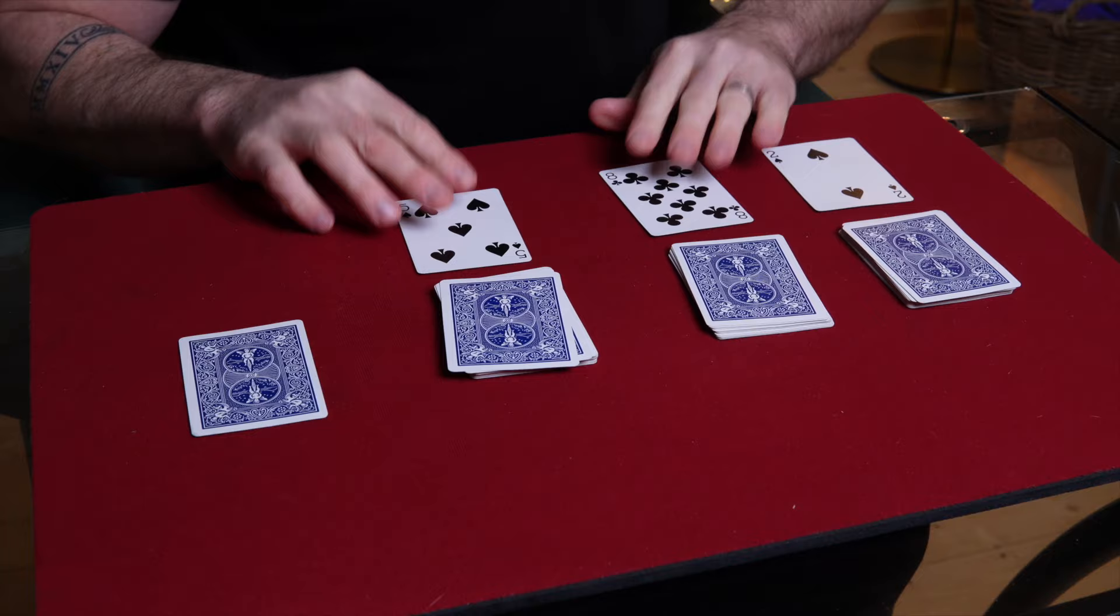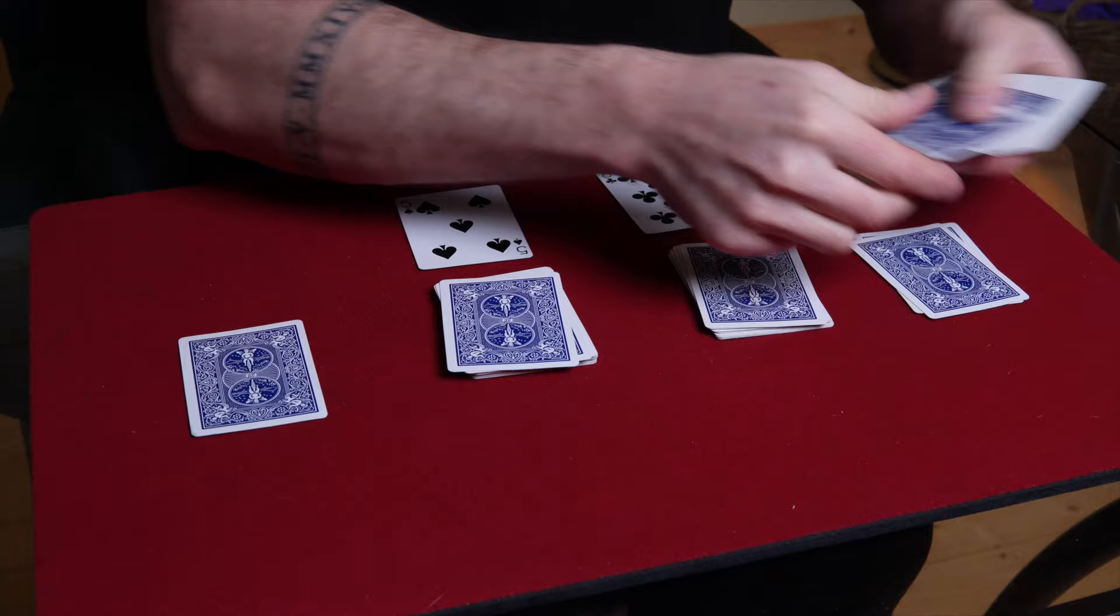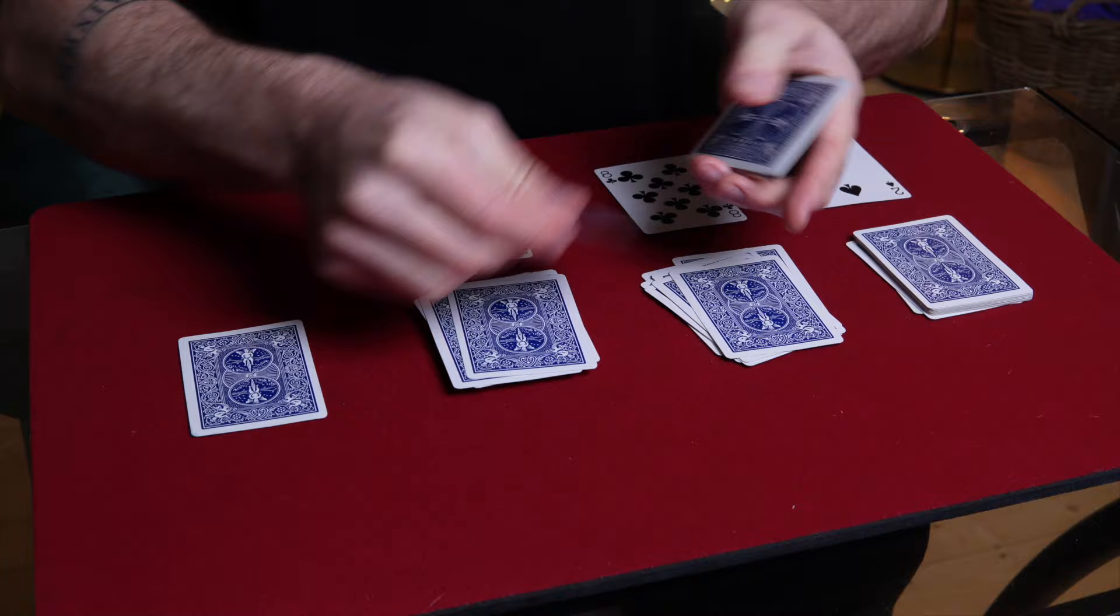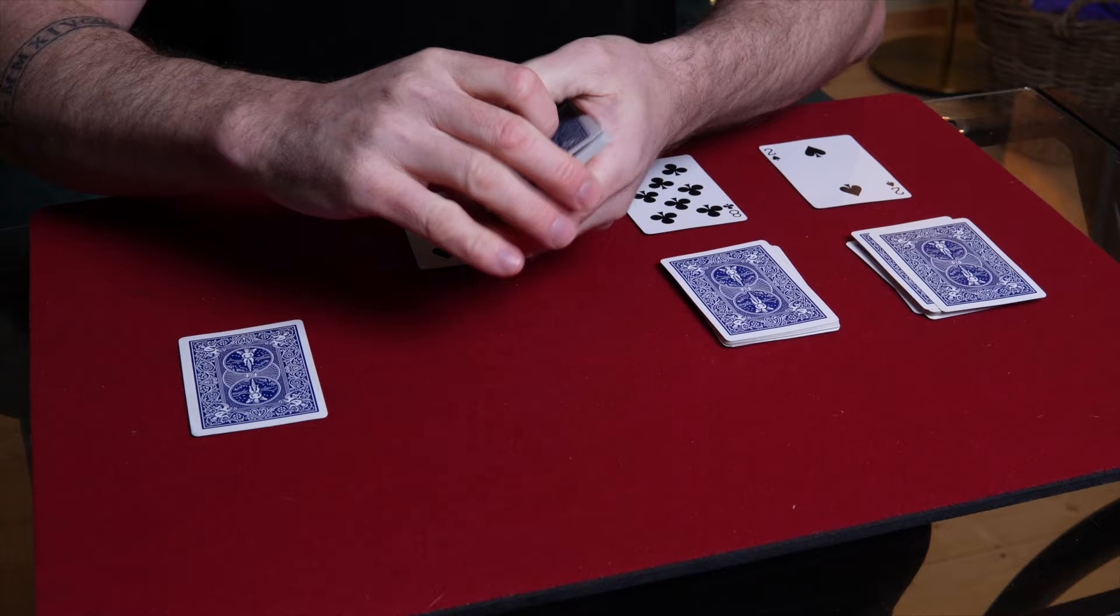And you say, okay, so this card's two. So we're going to deal two cards down like this, put two cards onto each pile and leave them there. Then this is eight. So we're going to deal eight cards. That's one, two, three, four, five, six, seven, eight. We're going to deal a card onto each pile and put these back. And then finally, we've got five, which is one, two, three, four, five. Cut onto this pile and put these back.